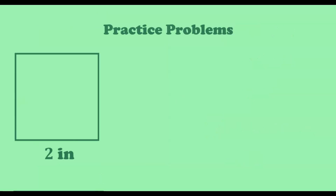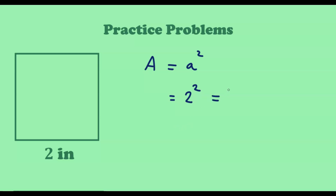Now, let us have a look at a few practice problems. Let us determine the area and perimeter of each of the given squares. Looking at this first square, we can see that the length of the side is 2 inches. First, let us determine the area, which is equal to A squared. In this case, A equals 2, so we have 2 squared, which is equal to 4. The unit of the area will be square inches, so the area is 4 square inches.